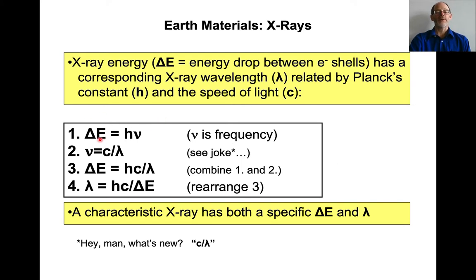So if you look at this relationship, the energy drop is equal to Planck's constant times the frequency. Then you can express frequency in terms of the speed of light, c, and the wavelength, lambda. If you combine equations one and two, then you can express the energy drop in terms of Planck's constant, speed of light, and wavelength. And so you can rearrange this as wavelength equals Planck's constant times speed of light and other constants divided by the energy drop.